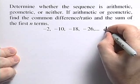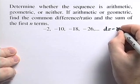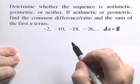So we see that we have a common difference, d, which is equal to negative 8. Therefore, this sequence is arithmetic.